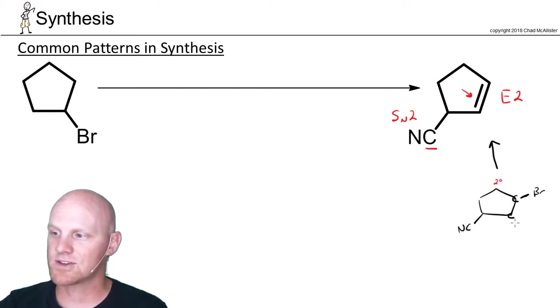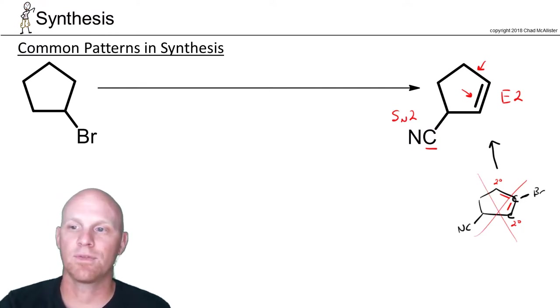But the problem is that both adjacent carbons are secondary, and so I could form the alkene here or here. And one of those works, and this is my desired product. One of them would put the alkene over here, and that is not my desired product, so I'd at best only get a 50% yield. This is probably not the best way to go about this.